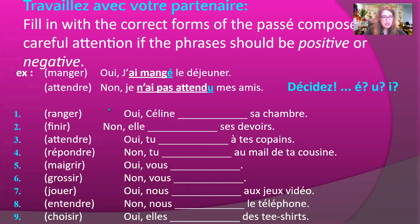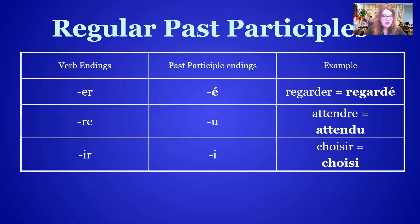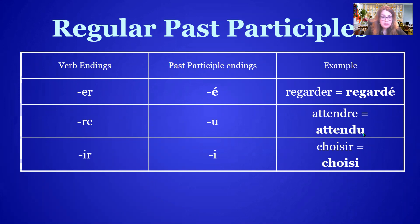Here is a chart of regular past participles. For regular ER verbs, we drop ER and add é (accent aigu) — example: regarder→regardé. For regular RE verbs, we drop RE and add U — example: attendre→attendu. For regular IR verbs, we drop IR and add I — example: choisir→choisi.